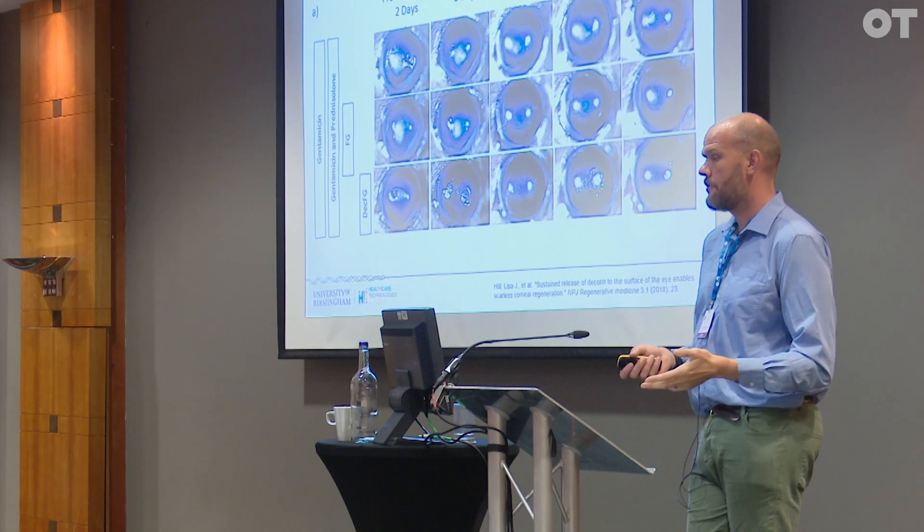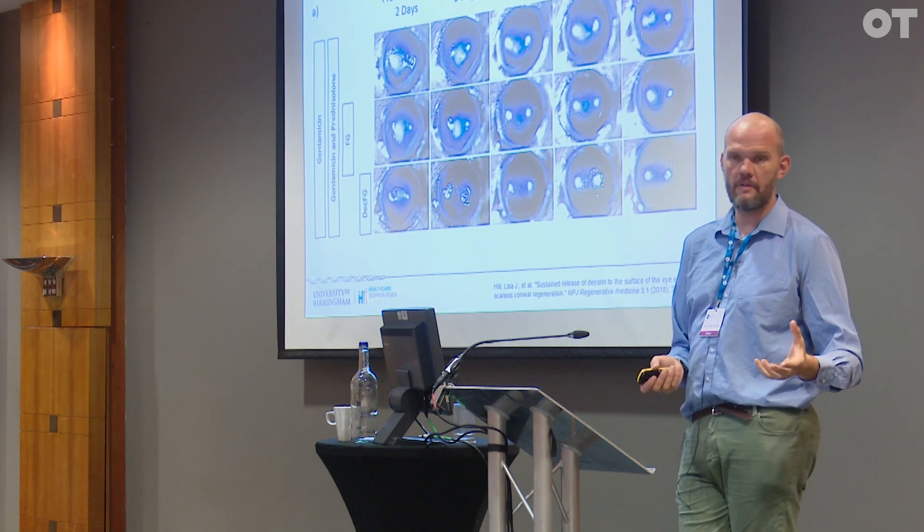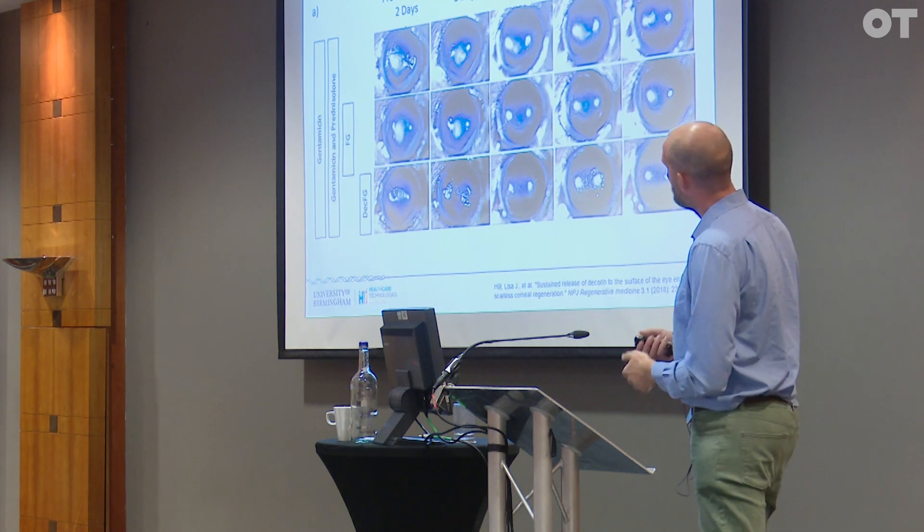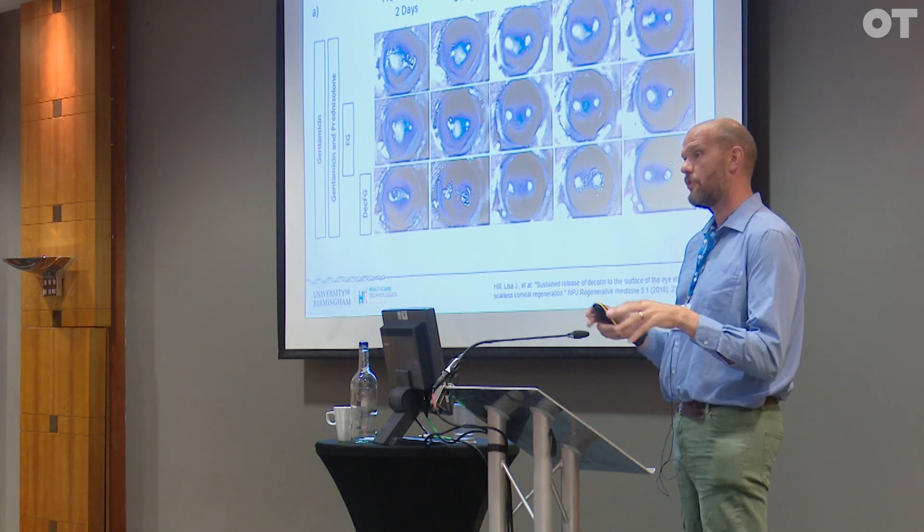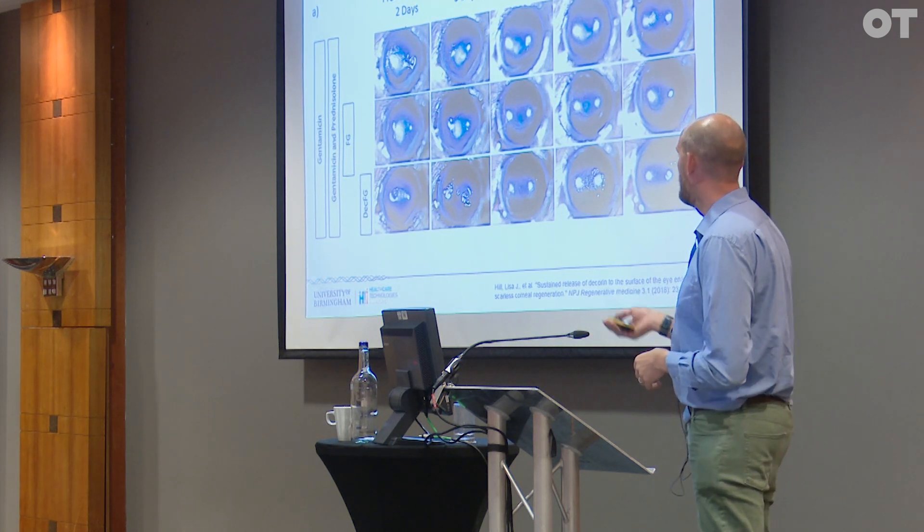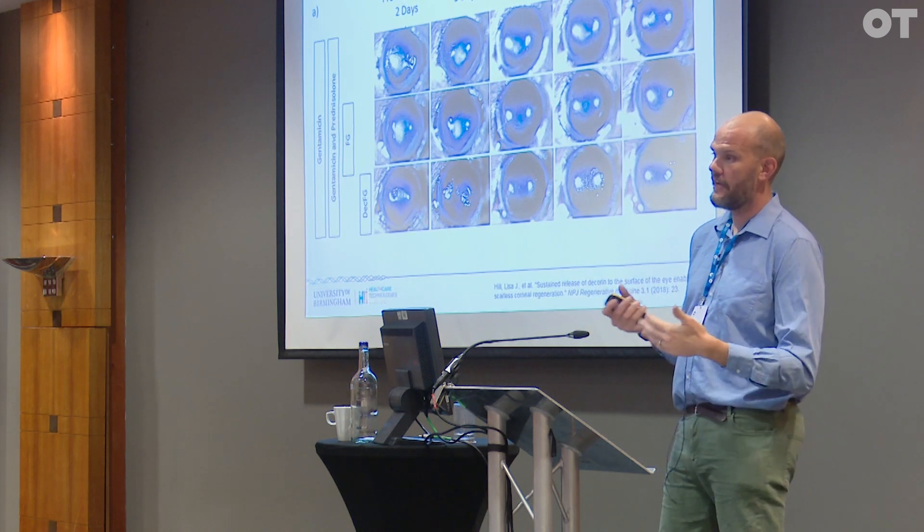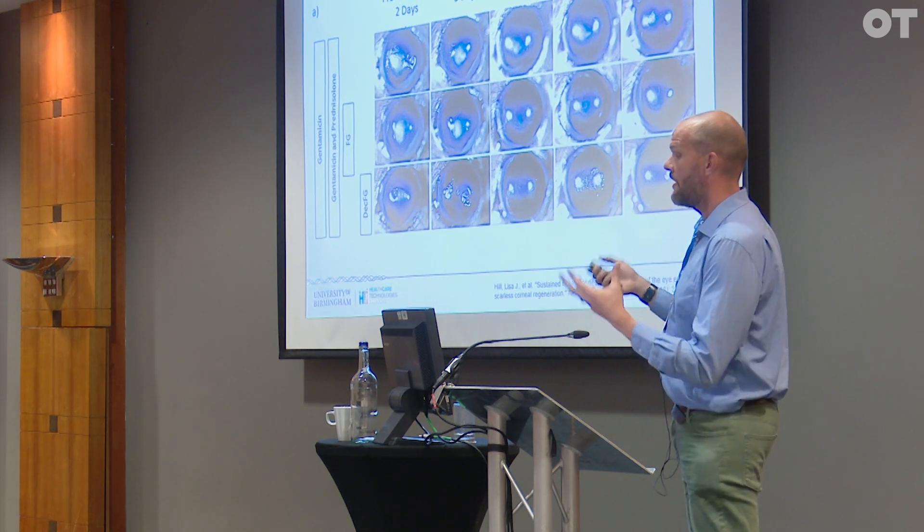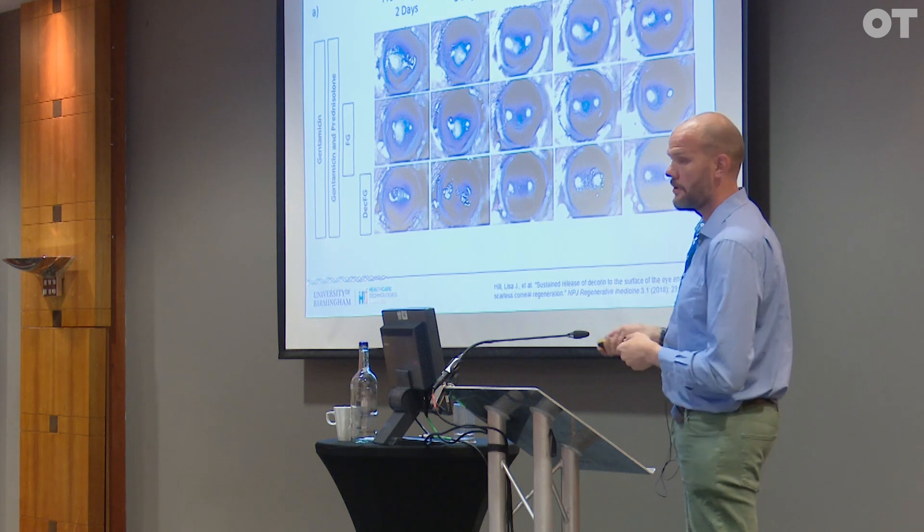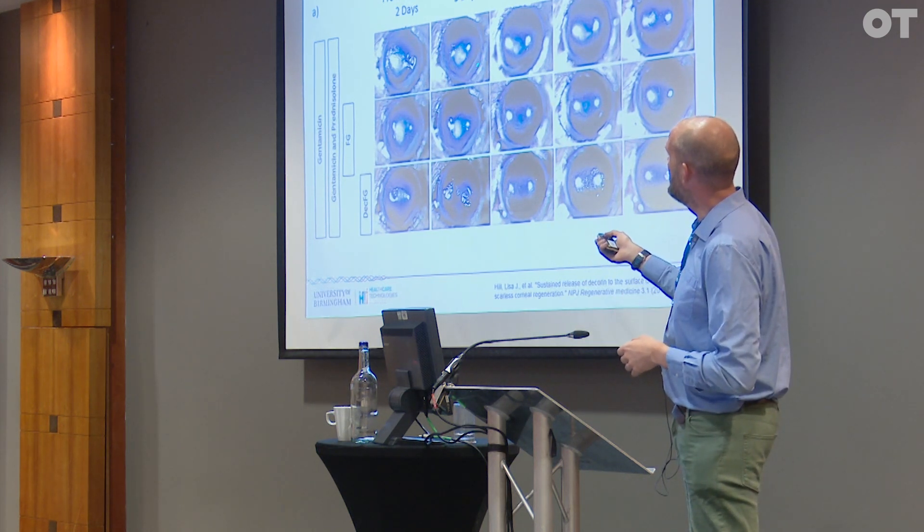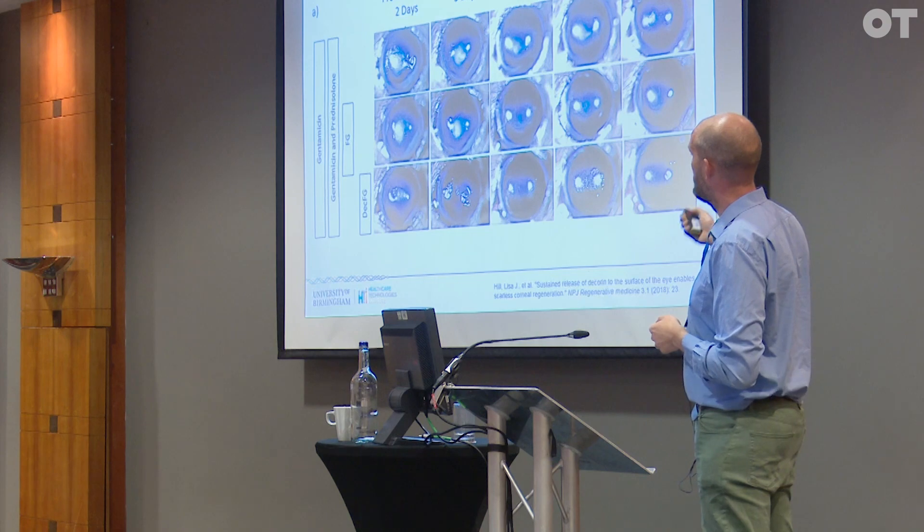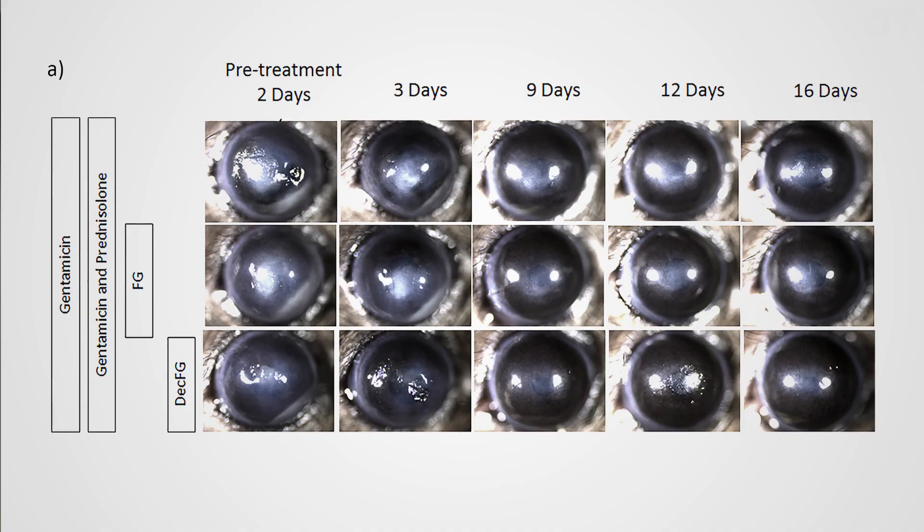To show that it was efficacious, we had to test it in a much more aggressive model of microbial keratitis. One of my postdocs at the time, Lisa Hill, went to University of California Irvine, where she worked on a model where they effectively scratch the surface of a rodent eye and introduce a pseudomonas infection onto the surface of the eye until the eye ulcerates, and then apply gold standard treatment. They look at dexamethasone and gentamicin sulfate drops to get rid of the infection, and then look at restoration of the corneal epithelium with time, keeping the experiment going out to around 16 days. We can see here a significant amount of opacity still left at the surface of the eye after 16 days.